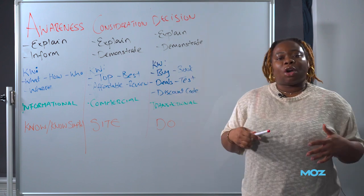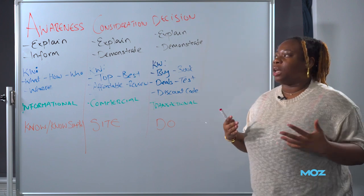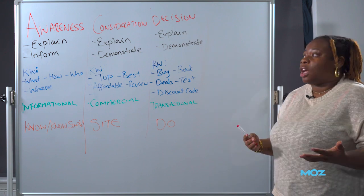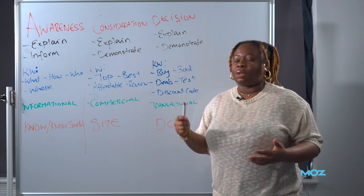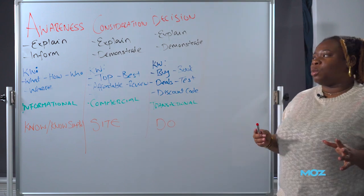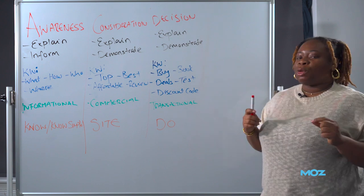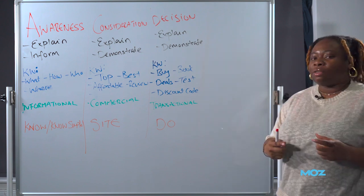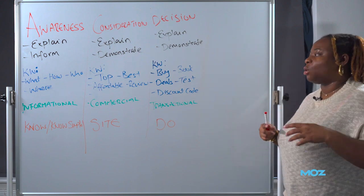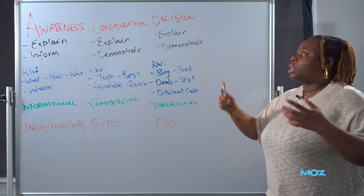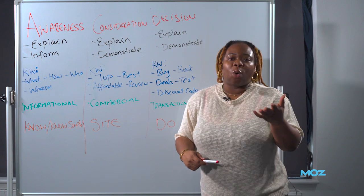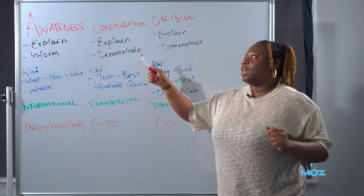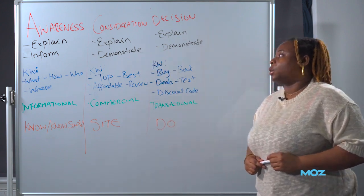So within awareness, essentially any content you make or any keyword research you are doing, you want to find the type of keywords that would help your users or your users might search for to either explain or be informed about something. So what kind of keywords can we look into? There are something called keyword modifiers. Now we all know keywords can be short tail, it can be long tail, but the modifiers are what help us figure out the intent of a keyword or the purpose. So within awareness, the modifiers that we can have are what, how, where, and who. These can be modifiers to let us know that the buyer is within the awareness stage because that's the type of keywords that they're using.